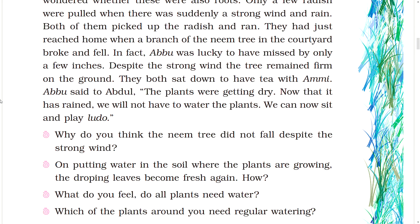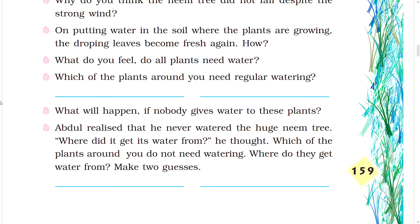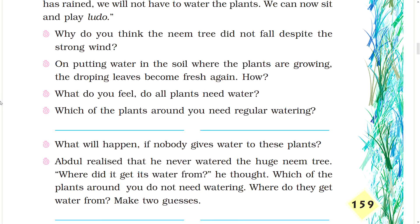Abu said to Abdul, "The plants were getting dry. Now that it has rained, we will not have to water the plants. We can now sit and play Ludo." Why do you think the neem tree did not fall despite the strong wind?